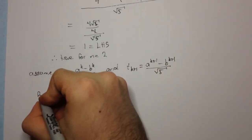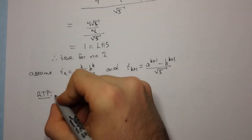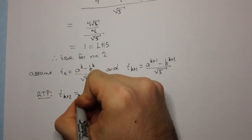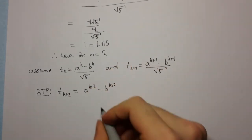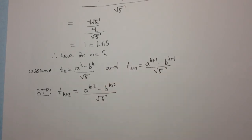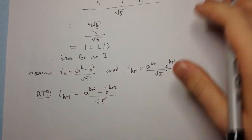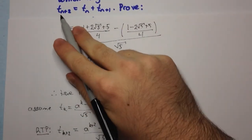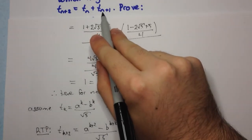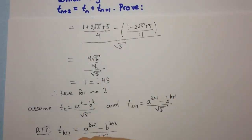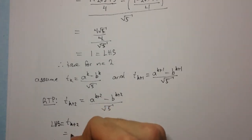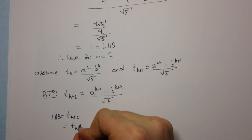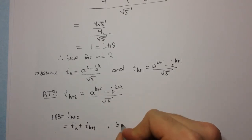Now we are required to prove that t(k+2) equals (a^(k+2) minus b^(k+2)) all over root 5. By our definition of the sequence, t(n+2) equals tₙ plus t(n+1). So therefore, the left-hand side, t(k+2), equals t(k) plus t(k+1), by definition.